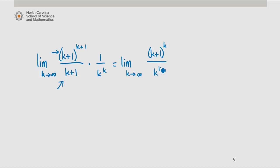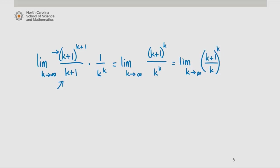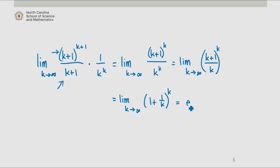Divided by k to the k, we can rewrite this as the limit as k approaches infinity of k plus 1 over k, to the k — which we recognize as the limit as k approaches infinity of 1 plus 1 over k to the k, which is actually equal to e. Since e is greater than 1, according to the ratio test, the series diverges.